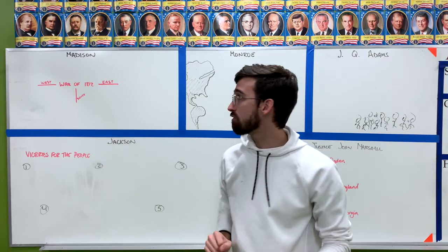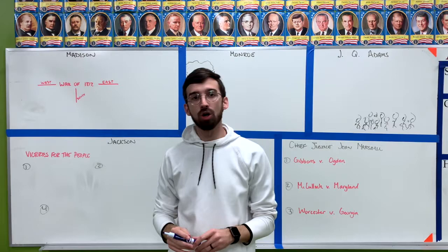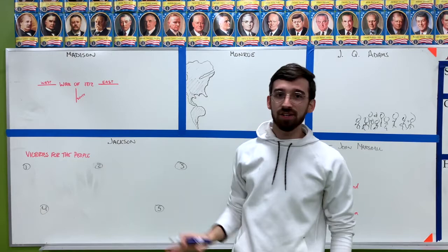If we want to review all of Unit 7, all we need to do is talk about five people: President Madison, President Monroe, President John Quincy Adams, President Andrew Jackson, and Chief Justice of the Supreme Court during this entire time, Chief Justice John Marshall. If we talk about what each of these guys does and why their presidencies or time is important, then we've covered all of Unit 7.